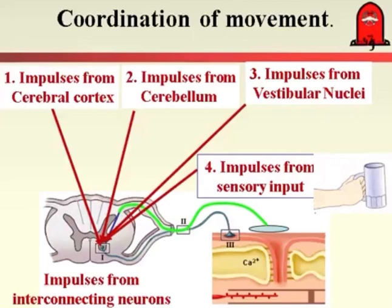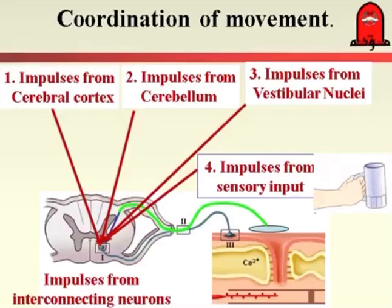Coordination of movement needs impulses from different areas, and these impulses are coordinated within the spinal cord to get the specific type of muscle contraction. The other function of the spinal cord is reflex activity. A reflex is an involuntary response to sensory input, and this response could be either motor movement or glandular secretion. In order to get any reflex — whether somatic or autonomic — we should have a normal receptor, normal sensory nerve fiber, normal spinal segment, motor nerve, and effector organ. If there is damage to any of these sites of the reflex arc, there will be loss of reflex activity.